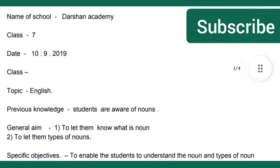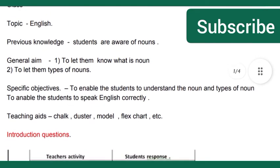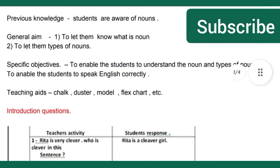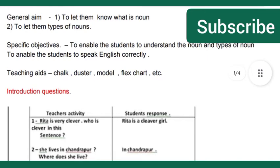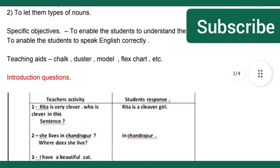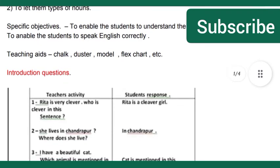Here you can see the lesson plan format. The topic is 'Noun' and the previous knowledge is that students are already aware of nouns. The general aim is to let them know what a noun is and to let them know the types of nouns. The specific objectives are to enable the students to understand nouns and the types of nouns.